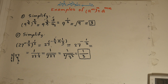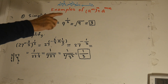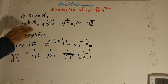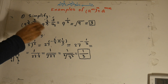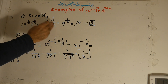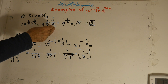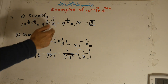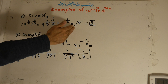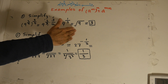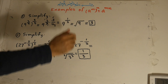To repeat: examples of (a^m)^n = a^(mn). Number 1: simplify 9 to the power of 2 over 3, all to the power of 3 over 4. This equals 9 to the power of 2 over 3 times 3 over 4. The 2 cancels with 2 and 3 cancels with 3, giving 1 times 1 over 1 times 2, which equals 9 under the square root of 2. The square root of 9 equals 3.